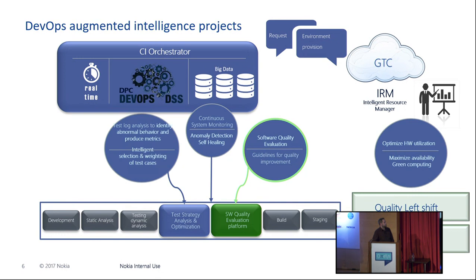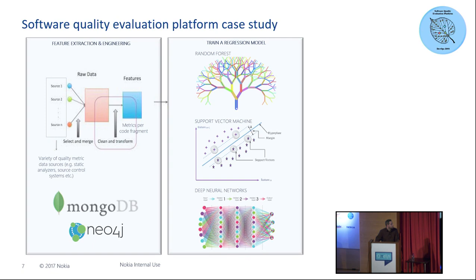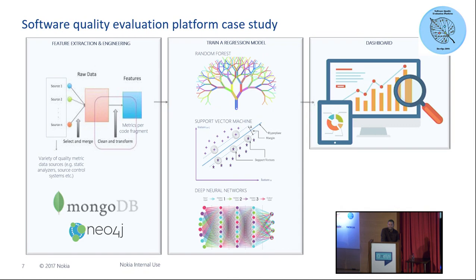We focus on the software quality evaluation platform. At a high level, various quality KPI areas are used to extract data. We merge, clean, and transform the data to create quality training data sets. The persistence layer consists of MongoDB and Neo4j. These data sets are used as input to a variety of machine learning algorithms — including random forests, support vector machines, and convolutional neural networks. The inference, decision, and analytics derived from these algorithms are depicted via a dashboard available to users for consulting purposes.